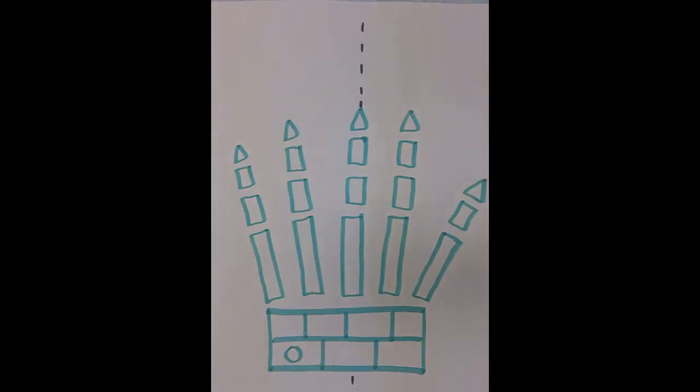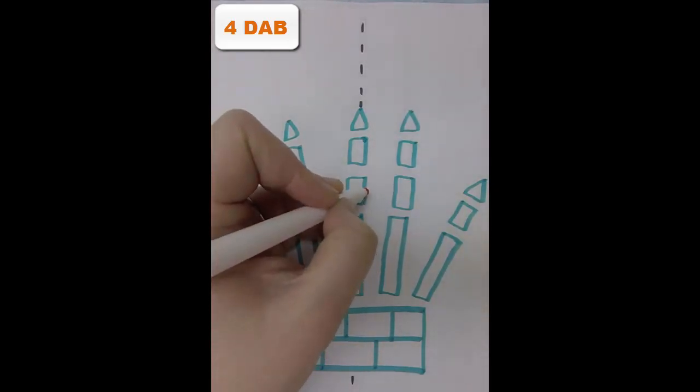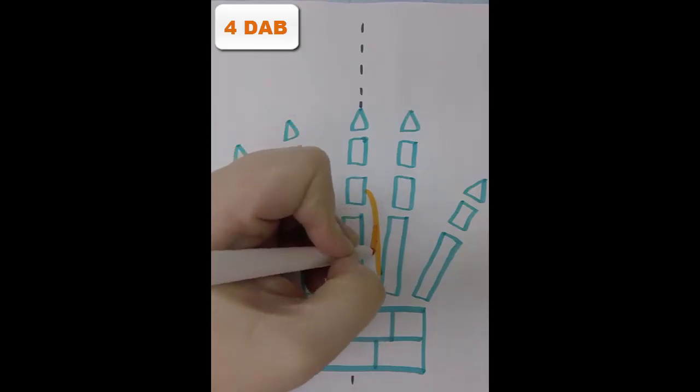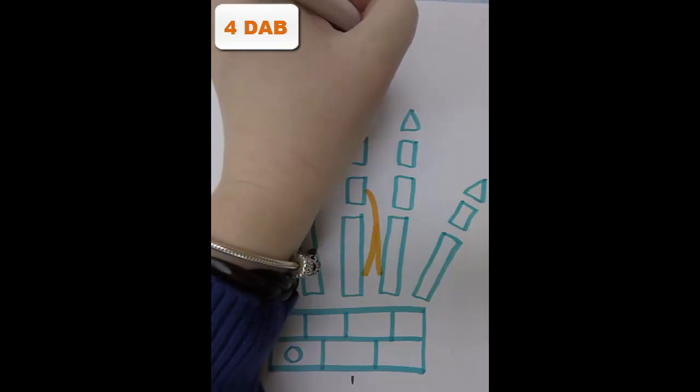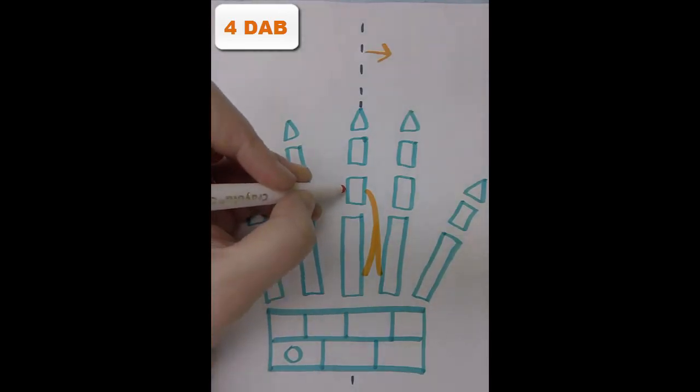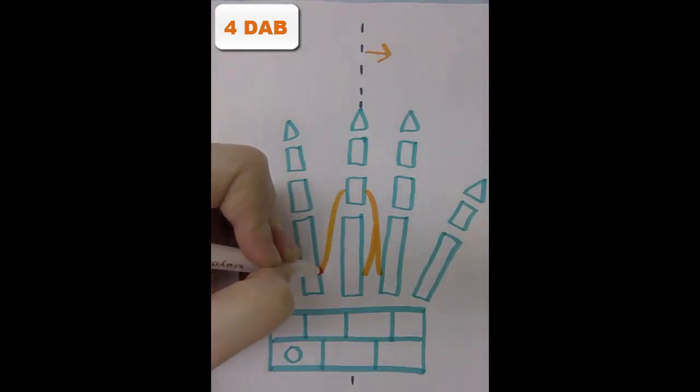The first thing we'll do is draw in the four dorsal abductors. Now because the third digit, the middle finger, is the midline of the hand, we know by definition that it only is able to abduct. So we have one on the lateral side and another one on the medial side of this finger.